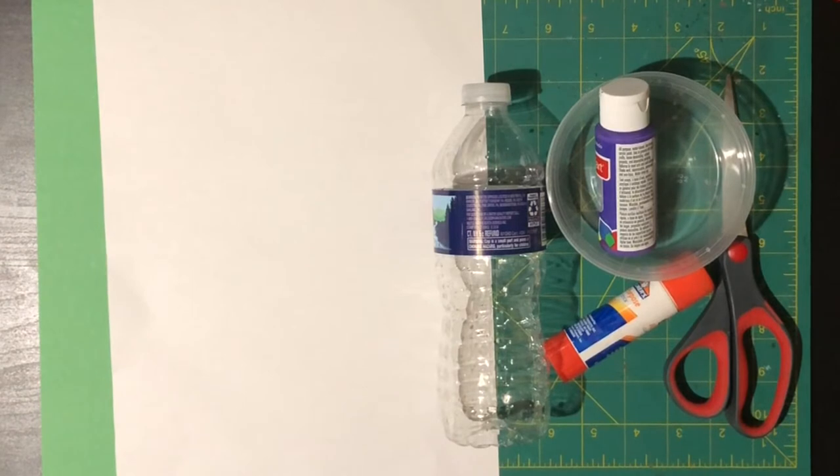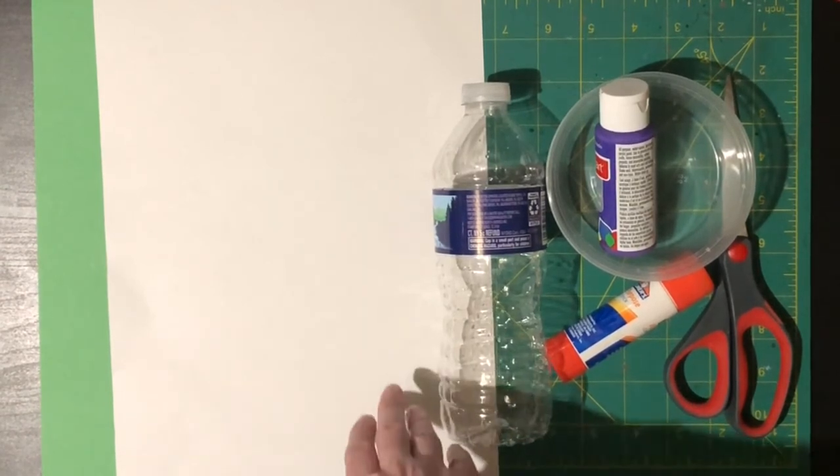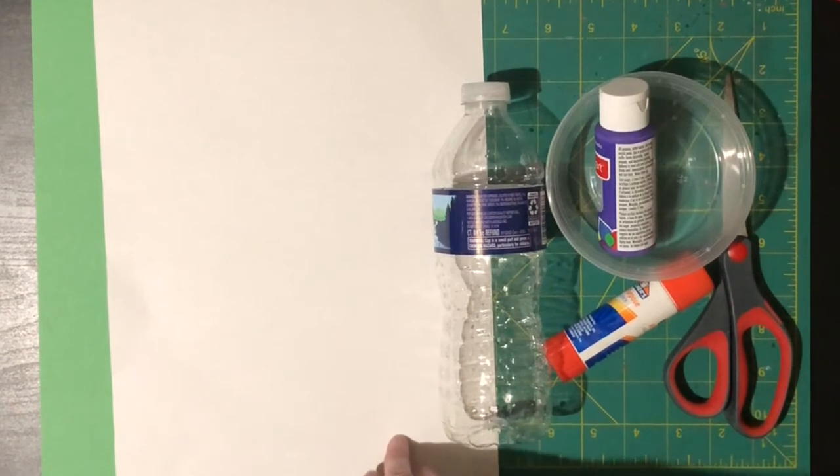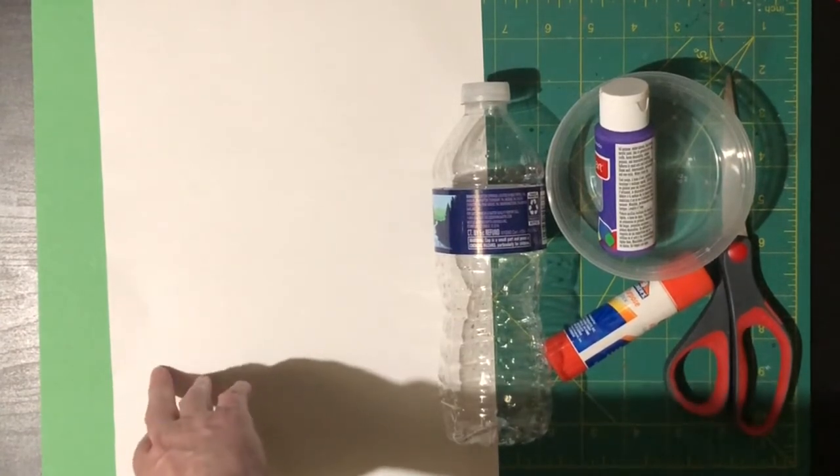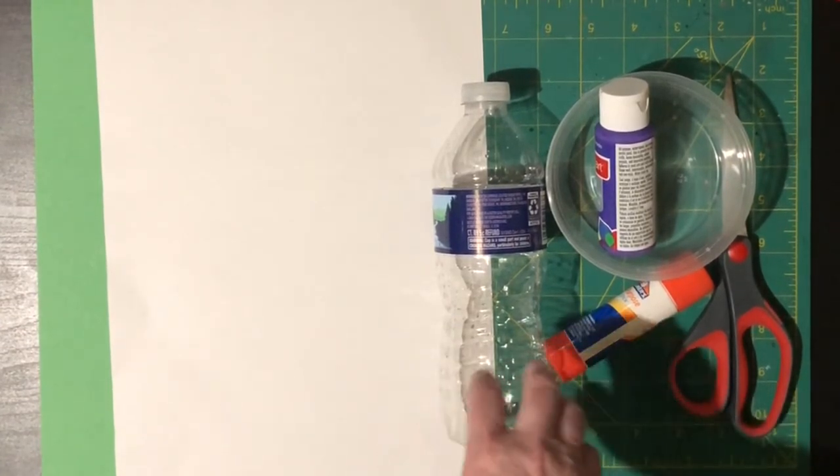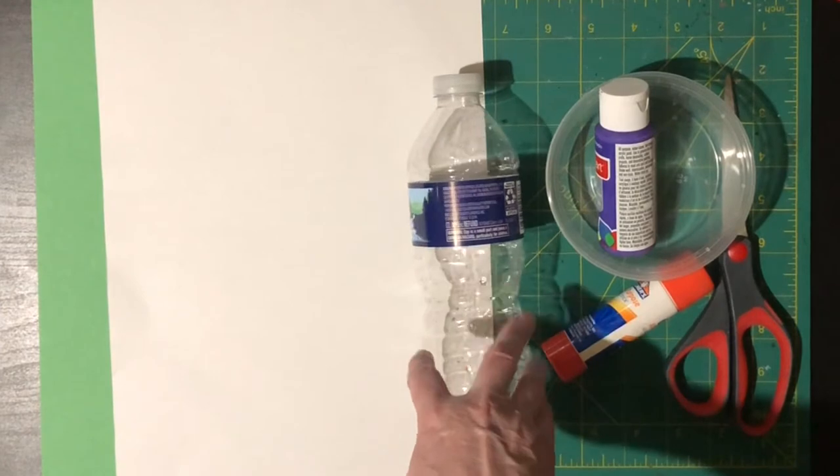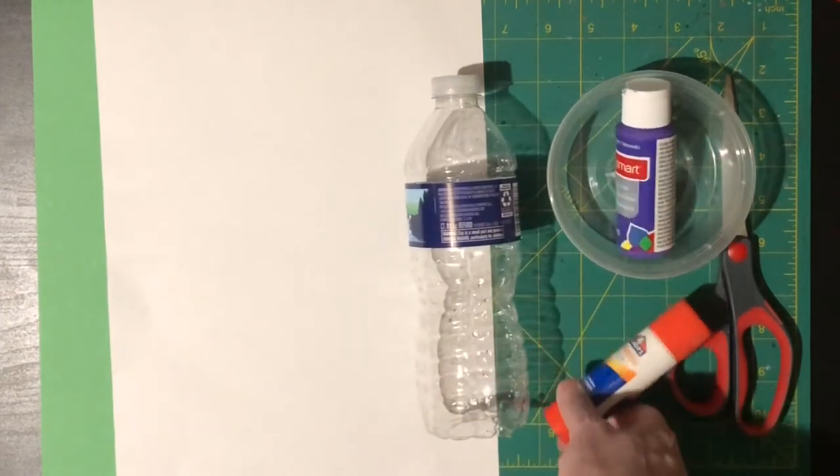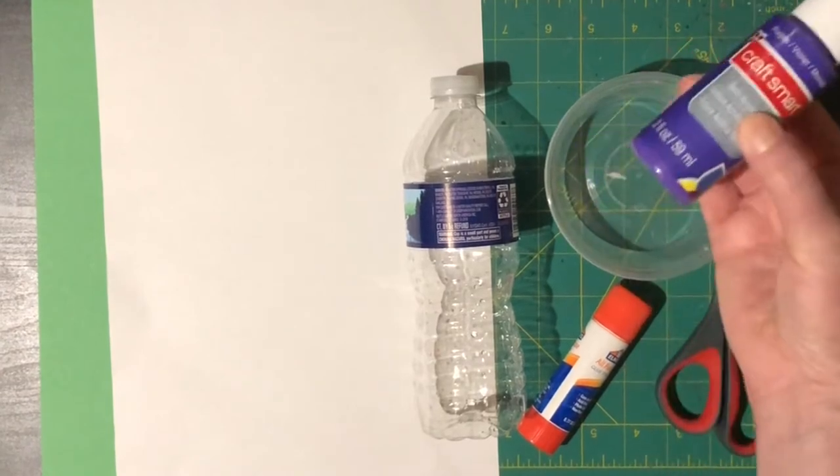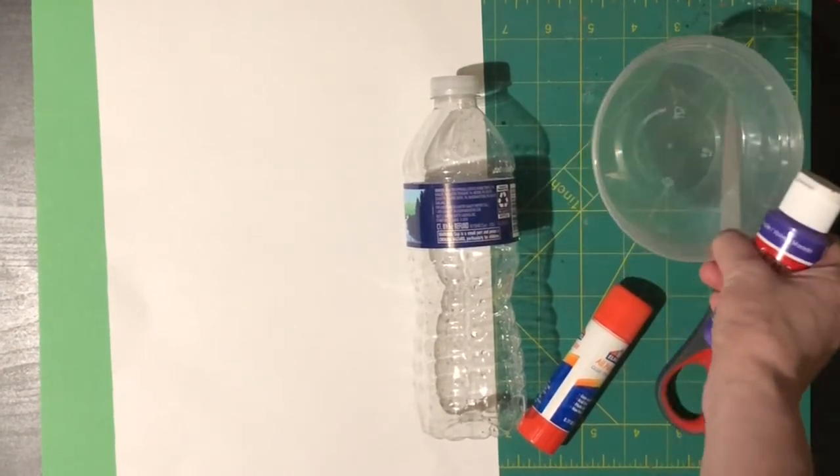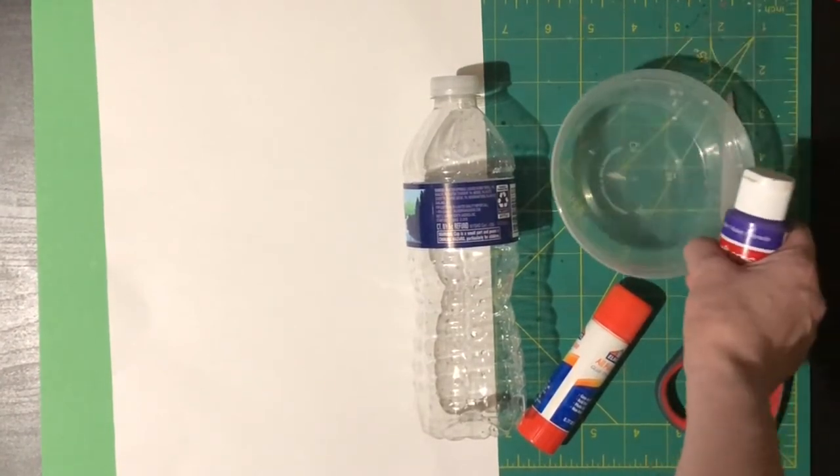So for today's craft, we just need a few basic supplies. I have some paper here. You want to use a lighter paper to show off your paint. I just went with white, but you can use whatever color you want. And I have some green construction paper for the leaves, an empty bottle with a bottle cap, some glue, scissors, some paint, and then a dish or a paper plate to put your paint in.